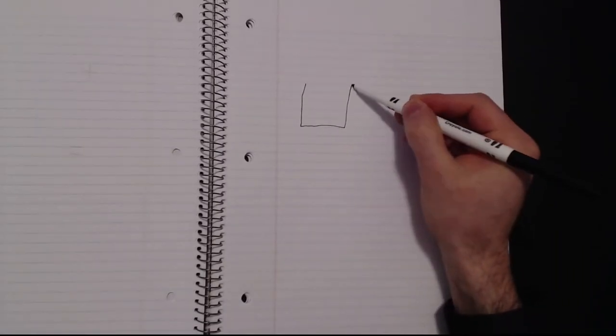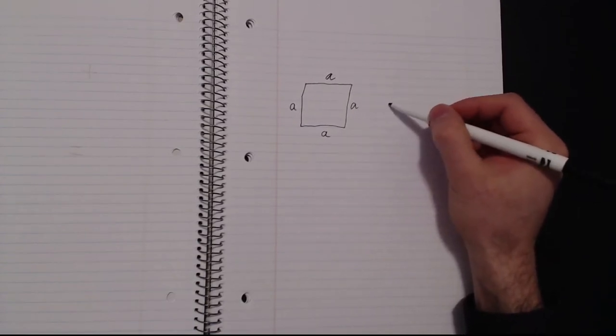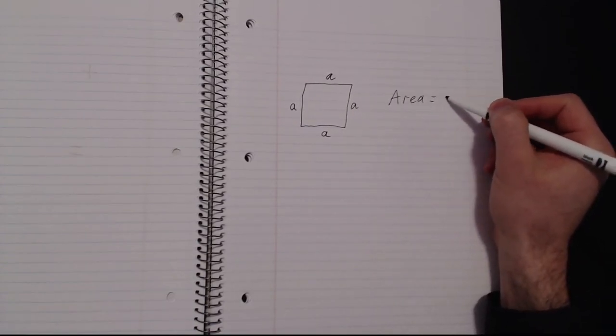Let's look at what a square is. So if we have all sides equal to each other, then the area would be one side times the other side, or that side squared.